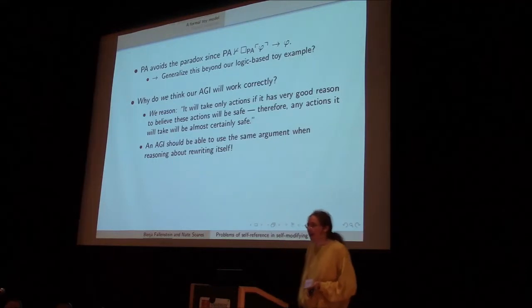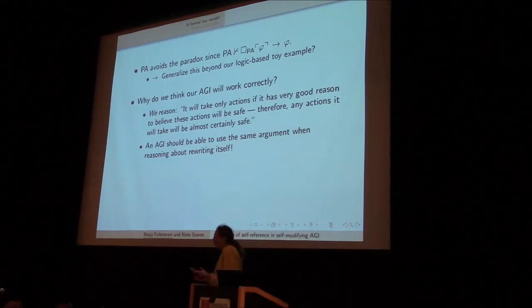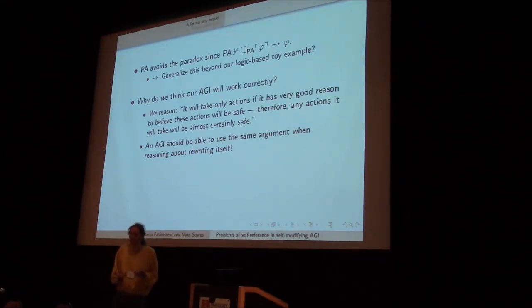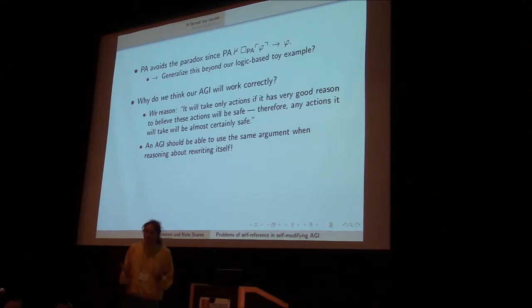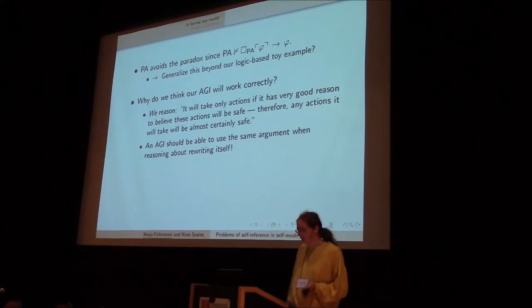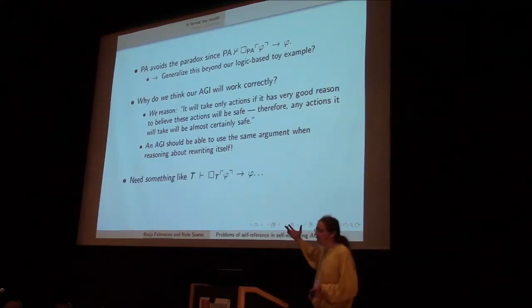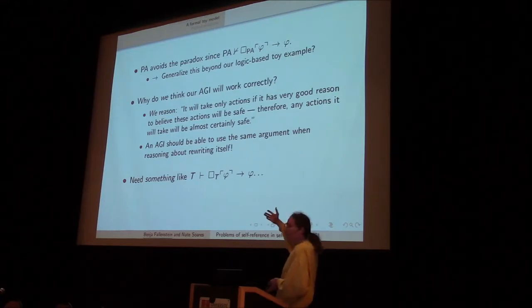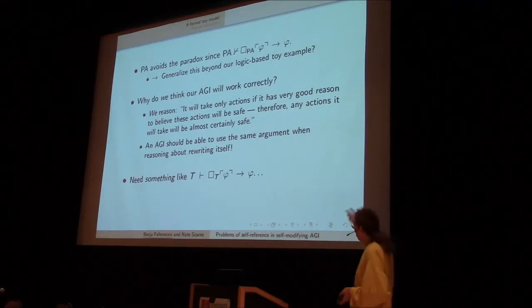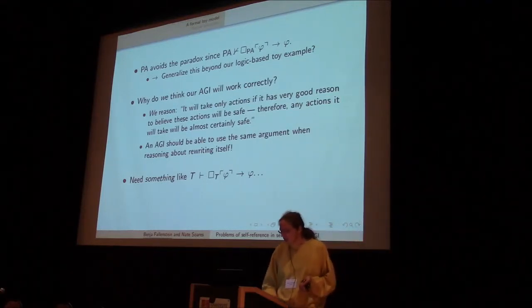So if we reason, well, it will only take actions it has shown to be safe, and therefore any actions that it will take are actually safe. And so if we have a self-modifying AI, well, how is it going to reason that its successor is also safe, that it's okay to make a self-modification, if it can't do the same thing that we do to convince ourselves that the original AI is safe? So we need something like this inference that says, well, if I build a successor and that successor reasons that something is a safe action, then that's actually a safe action if we want the AI to be able to do the same reasoning that we can do.